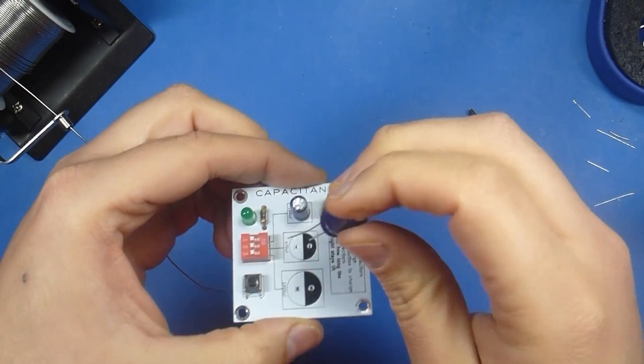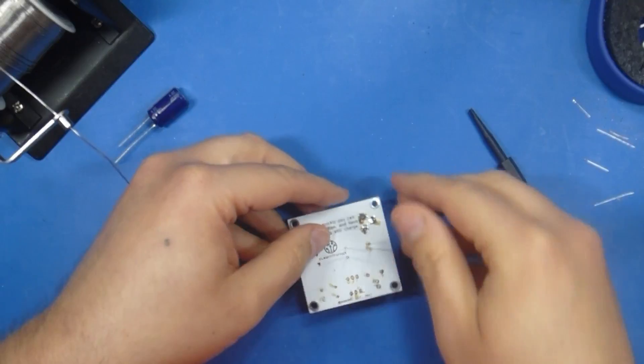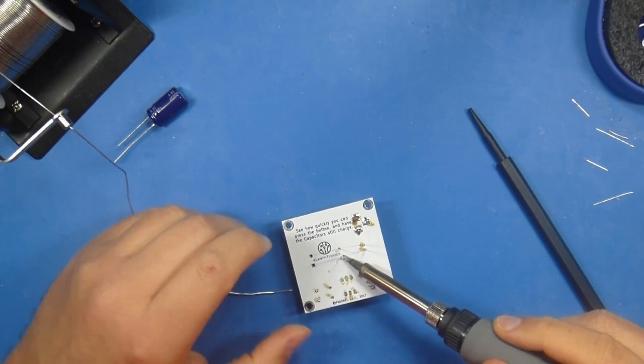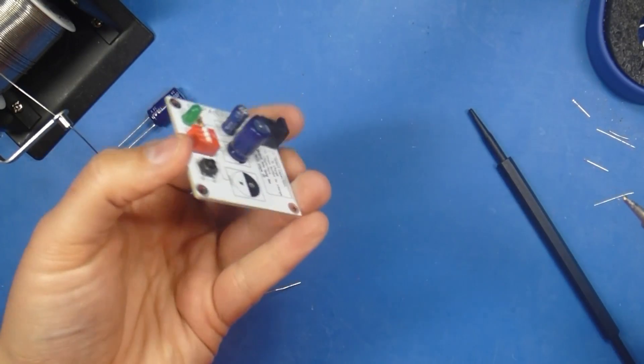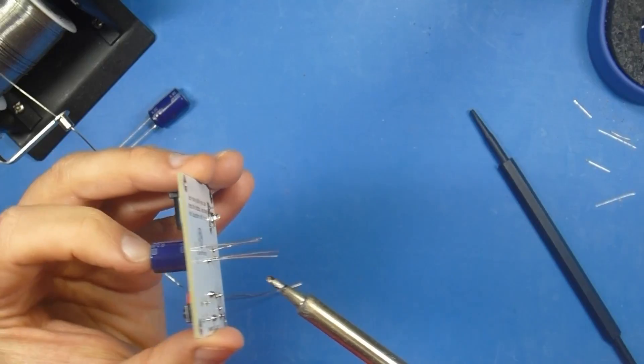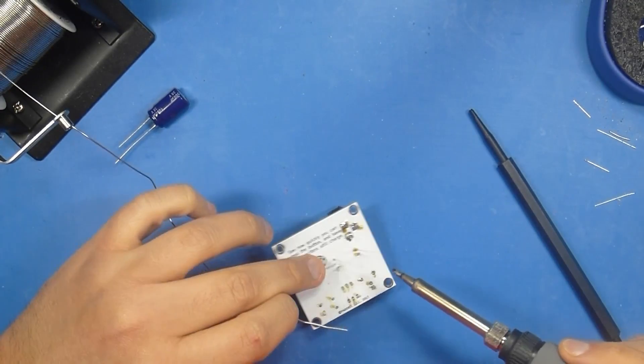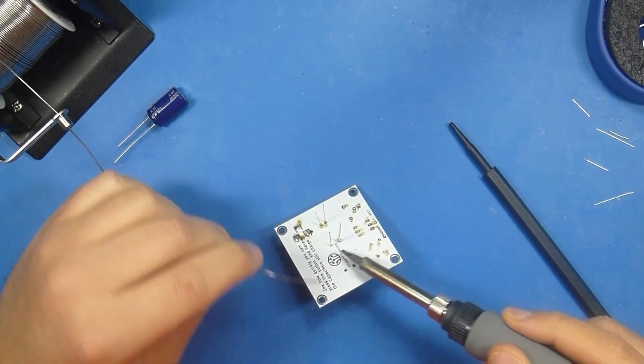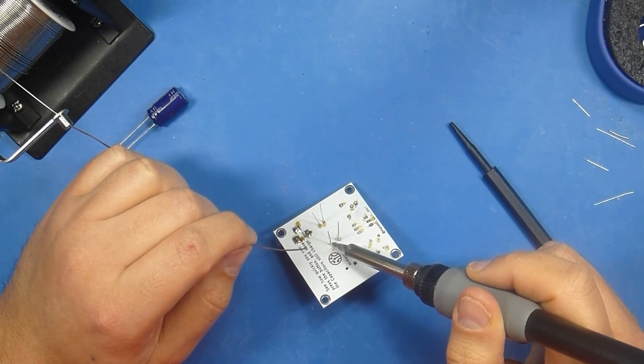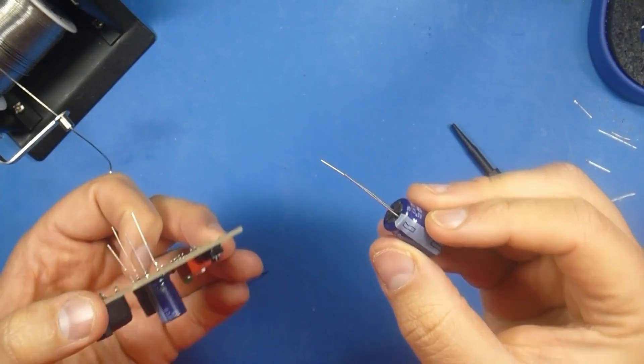So now we'll go to our 470 microfarad capacitor that's going to go in the middle. Again we want the negative side pointed in the same direction as our 100 microfarad capacitor. You know the drill now, we're going to tack down one point. Let it set. See how we like it. I'm not, it's close. I'm being a bit of a perfectionist here but I want it to look pretty. Right and this can be a little wobbly. This is much easier on a heat proof soldering surface versus say trying to use helping hands up in the air. I'm not a huge fan of helping hands.